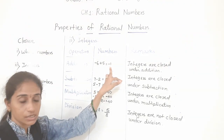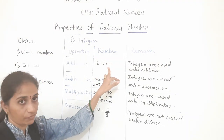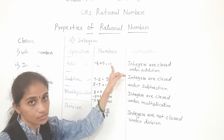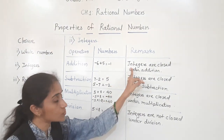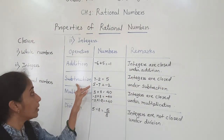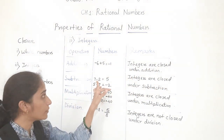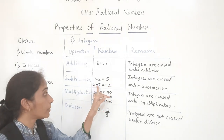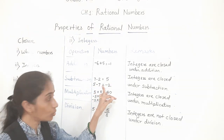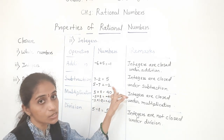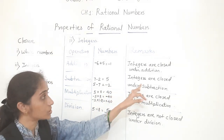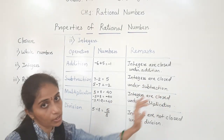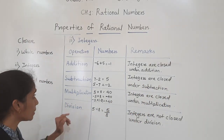To recap: for integers, minus 6 plus 5 equals minus 1, which is an integer — so integers are closed under addition. For subtraction: 7 minus 2 equals 5, a positive integer; 5 minus 7 equals minus 2, a negative integer — integers are closed under subtraction.